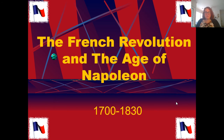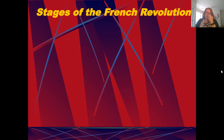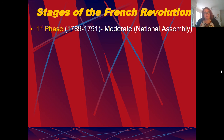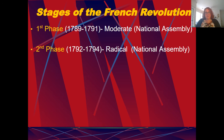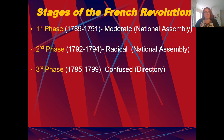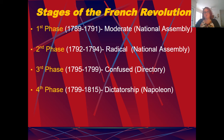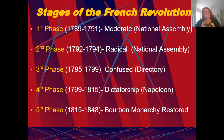The French Revolution really does usher in a new age, but there are some stages to this. First, you have the National Assembly — they're moderate. Then they become radicalized and start rebelling. The third phase is confusion about which direction to go. The fourth phase is dictatorship, and the last phase is the Bourbon Monarchy being restored.